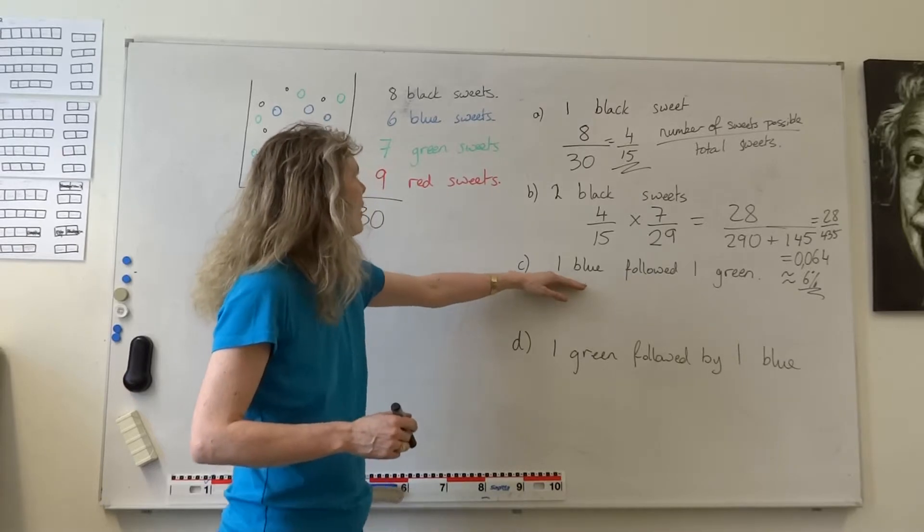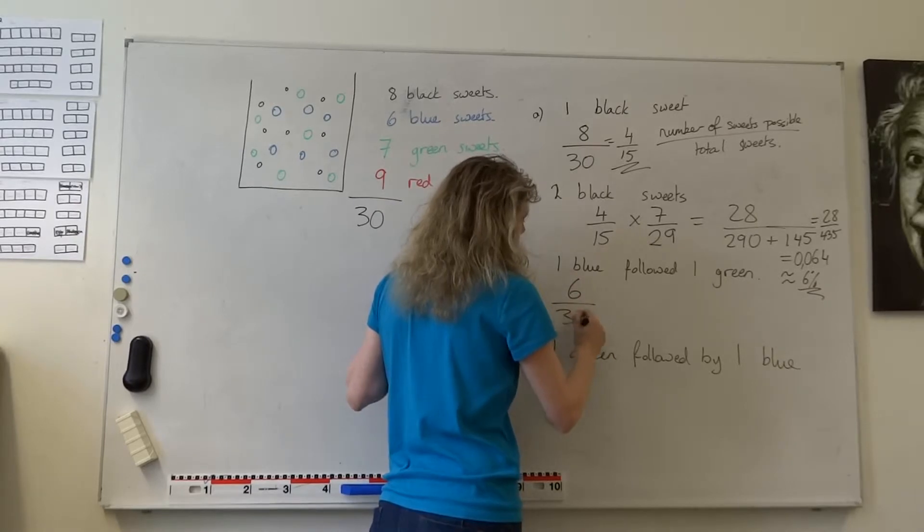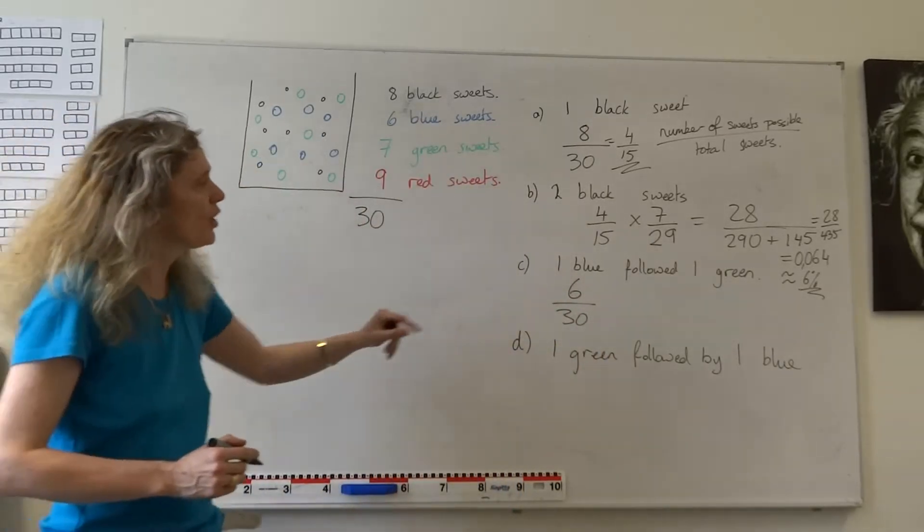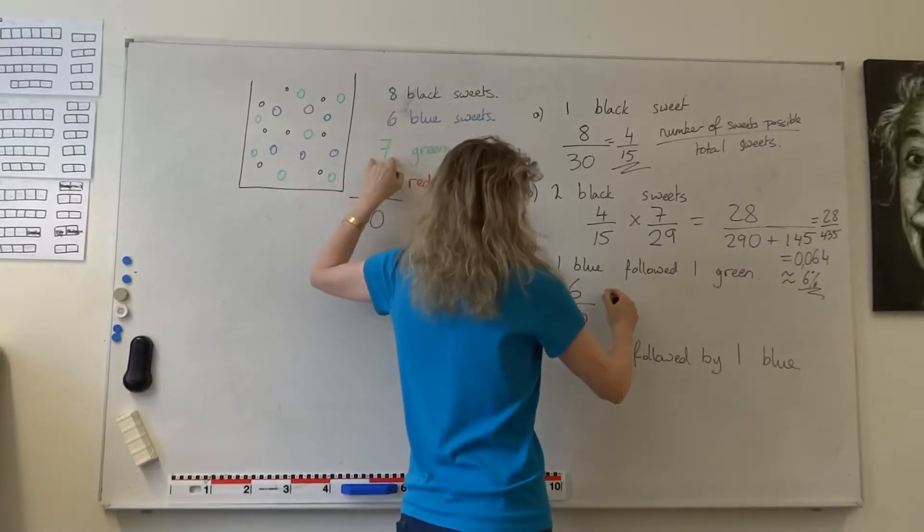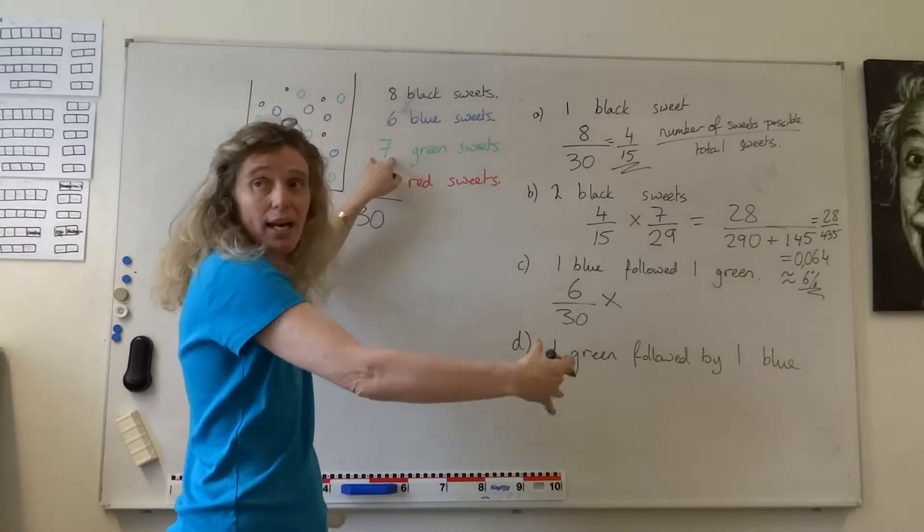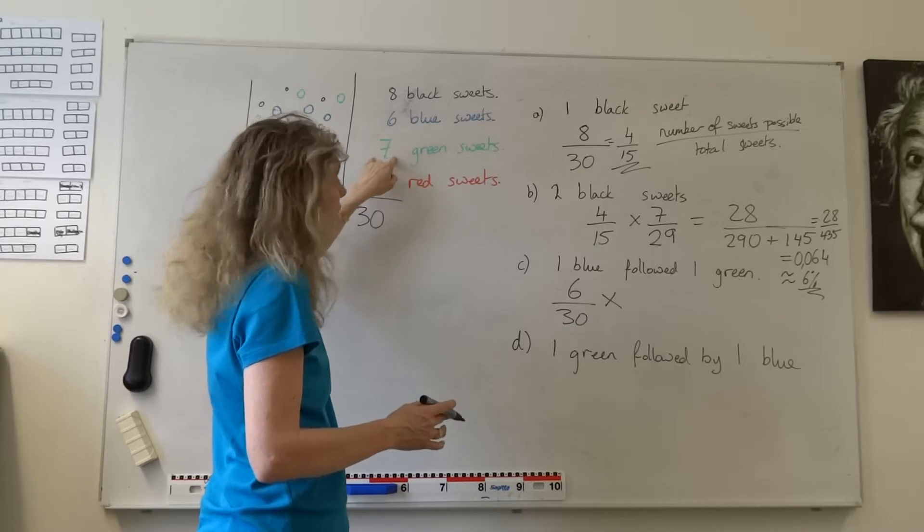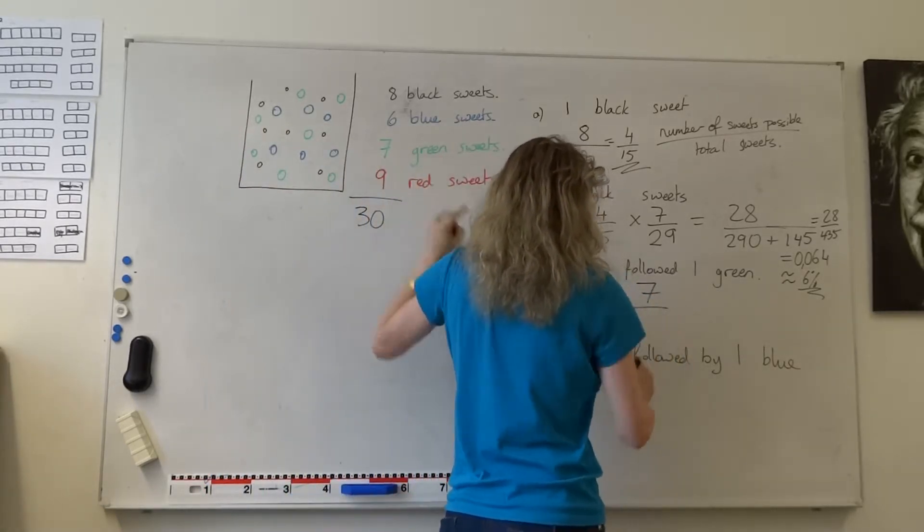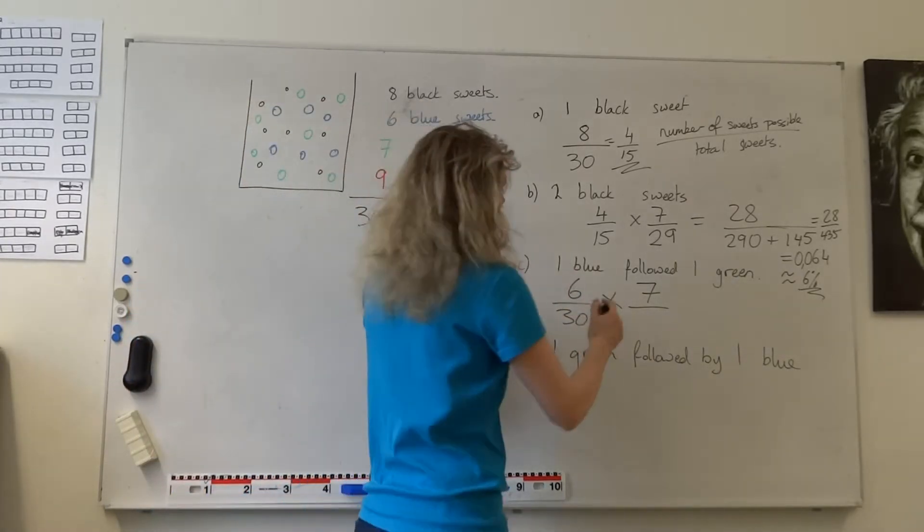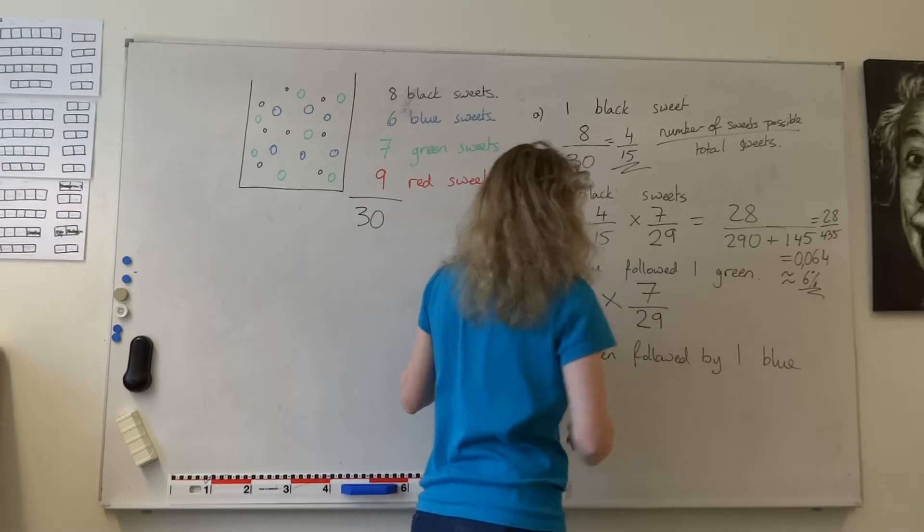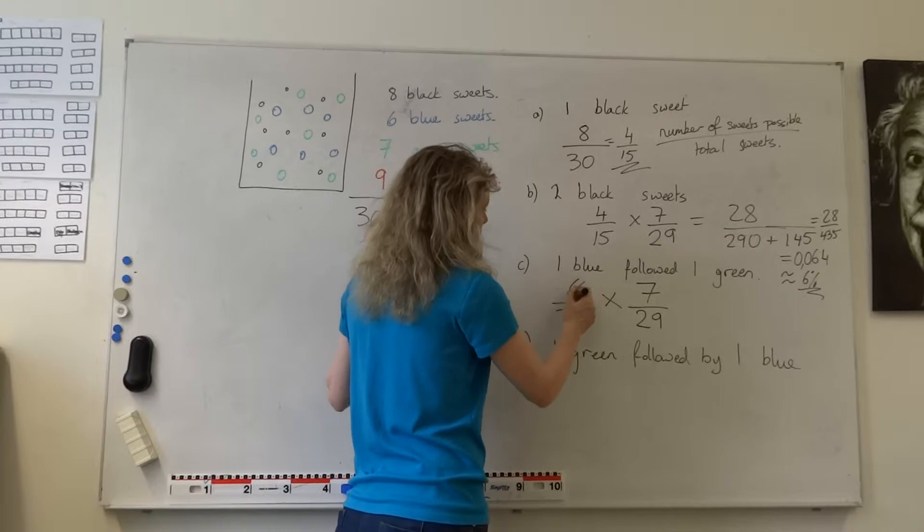What about one blue? Well, the chance of me getting a blue is there are six blue sweets out of a total of 30. Followed by one green. Well, I've got all my greens left. Followed by means and, directly after this 6 thirtieths, I also get one green sweet. There's seven chances of getting a green sweet. And there's only 29 sweets left because I've already taken one here.